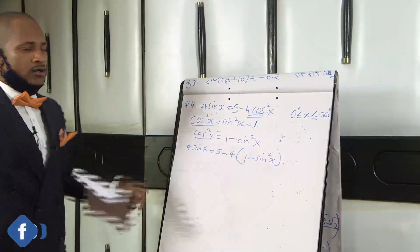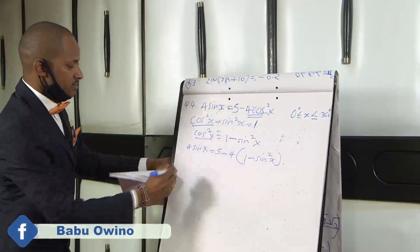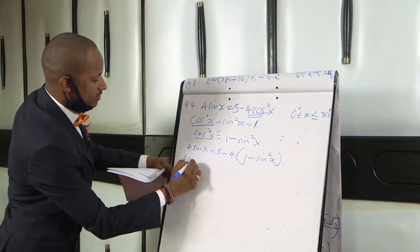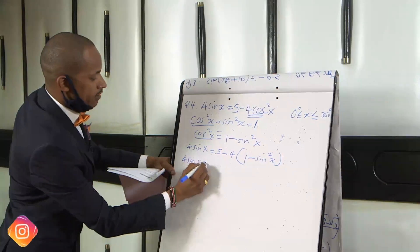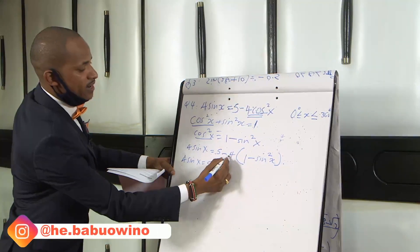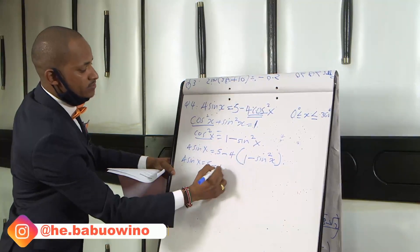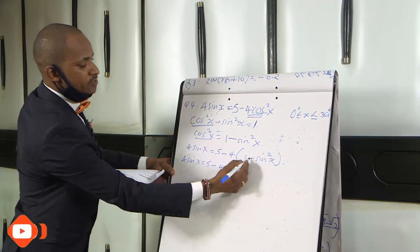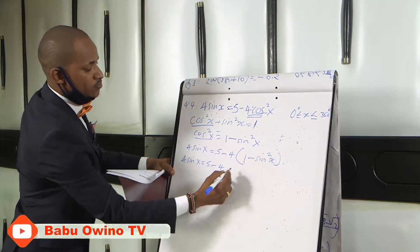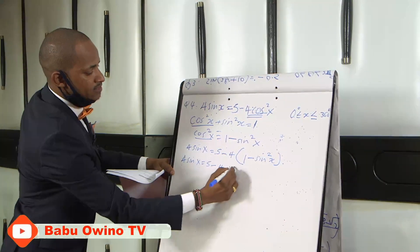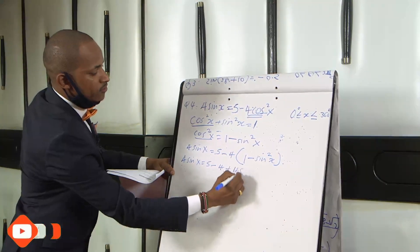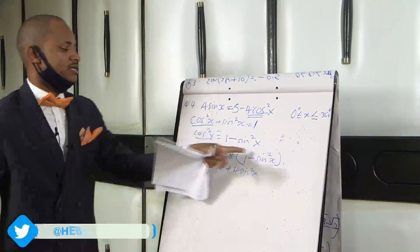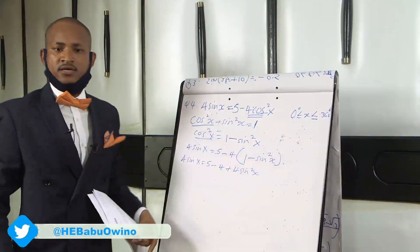We open the brackets and expand. That gives 4 sin x = 5 − 4(1) + 4 sin²x, which is 4 sin x = 5 − 4 + 4 sin²x. Remember, minus times minus is plus, so −4 × (−sin²x) = +4 sin²x.